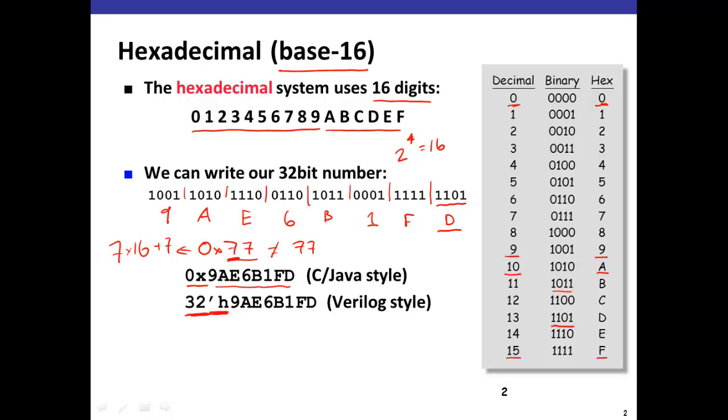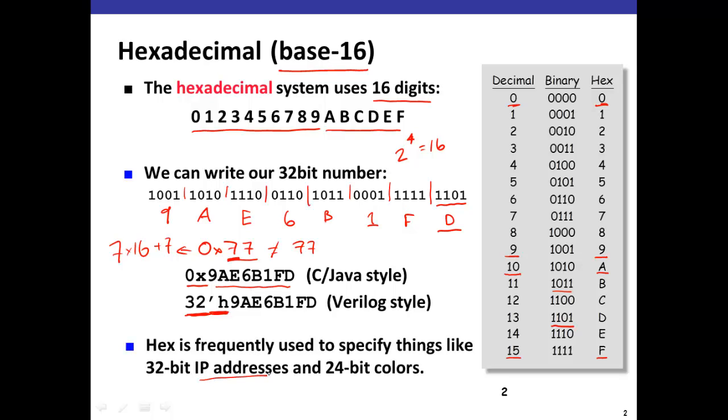So this representation is used a lot to specify things like IP addresses or 24-bit colors, things that are large binary numbers.